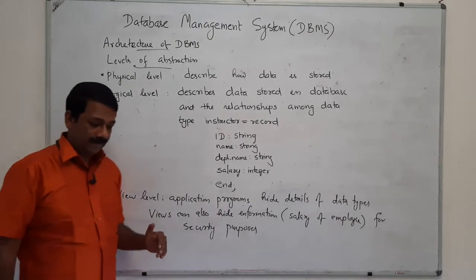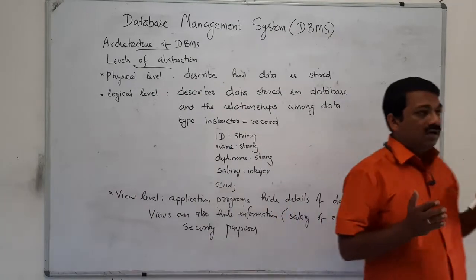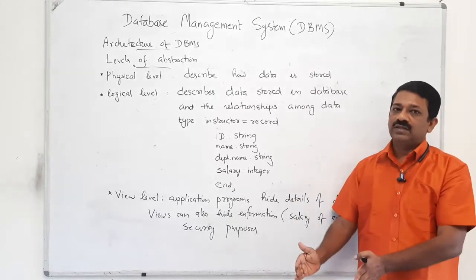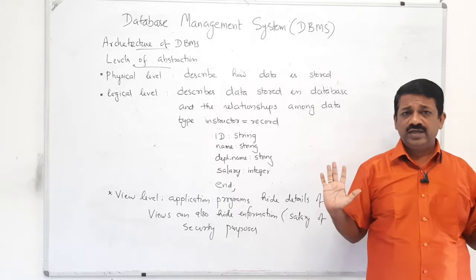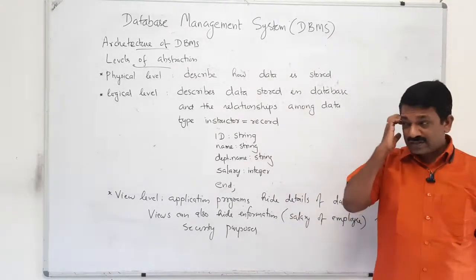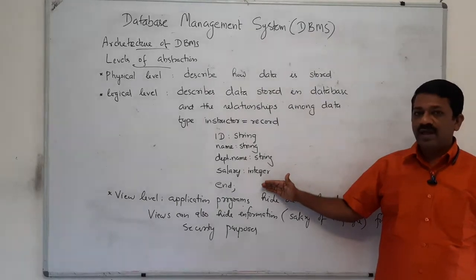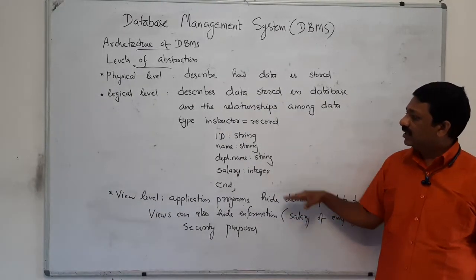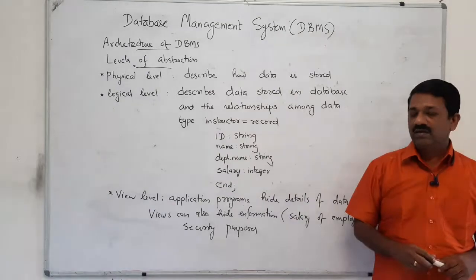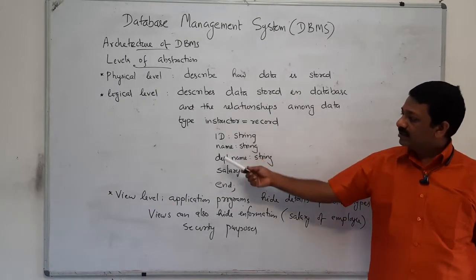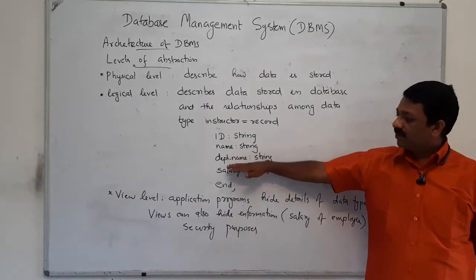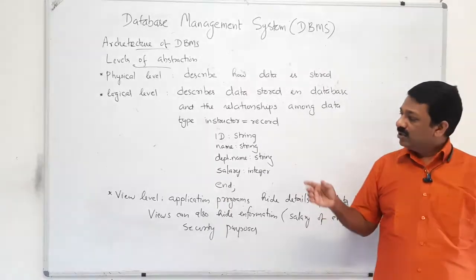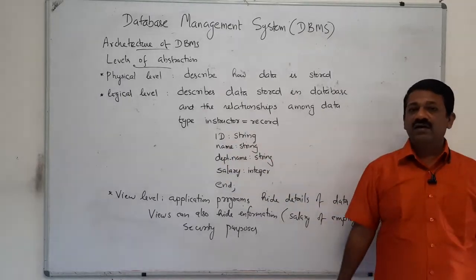The next level is the view level. There may be a number of records — instructor records, student records, department records — all interconnected. At the view level, for example, an application programmer may be interested only in the ID and name of the instructor. They don't want the department name or salary of the instructor, so a view is created that accesses only the ID and name.